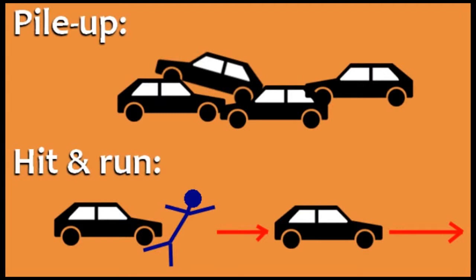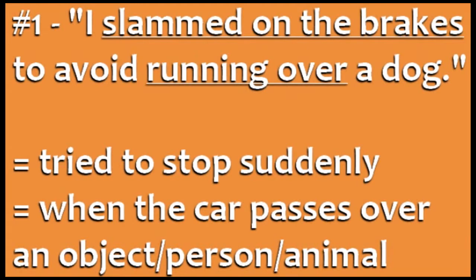Now we'll look at four descriptions of accidents and learn the verbs used for talking about them. Number one: I slammed on the brakes to avoid running over a dog. To slam on the brakes means to try to stop the car very suddenly, often in an emergency. The phrasal verb run over is used when a car passes over an object, animal, or person.